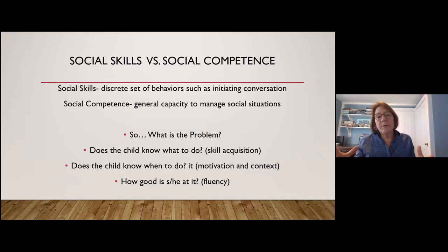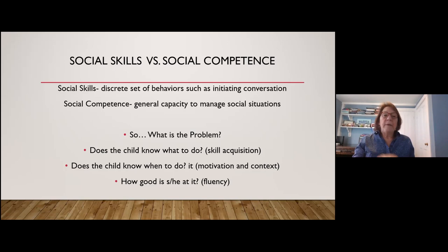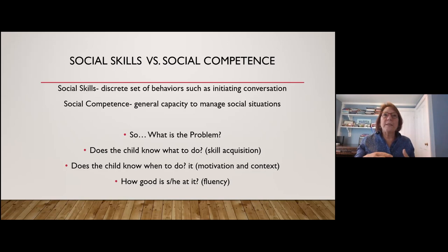To summarize: every kid develops differently and at their own pace because of the interweaving of the built-in roadmap, the individuality of the child, and the context the child is living in. There is a general pattern and calendar for social competence development. And we need to be much more clear about exactly what the problem is and where it manifests before we talk about helping our kids.